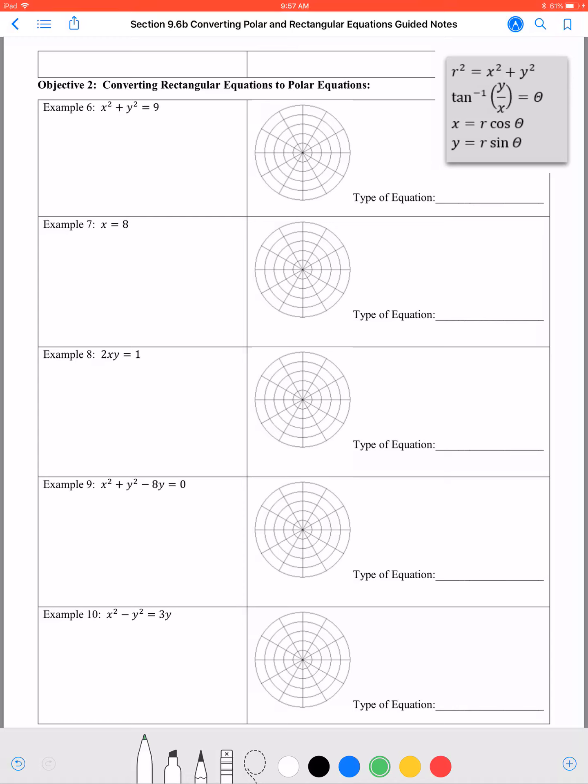And now we convert from rectangular to polar form. So now we're taking equations with just x and y. We want to eliminate x and y and get things in terms of r and theta if they're needed.